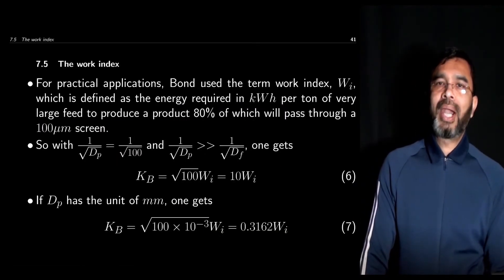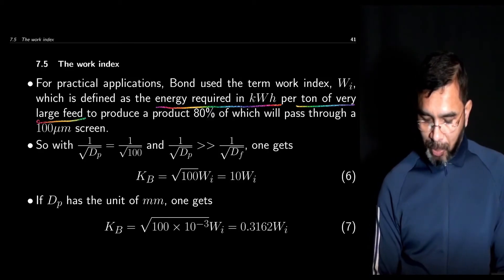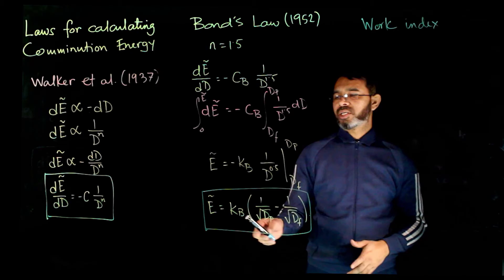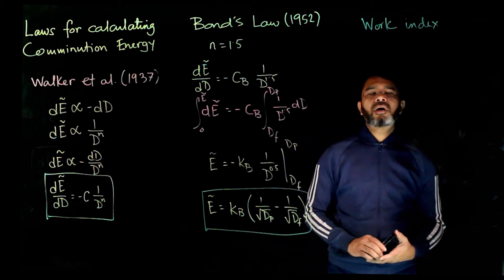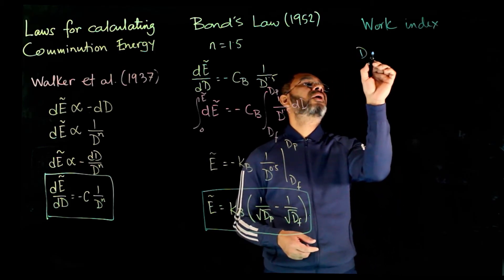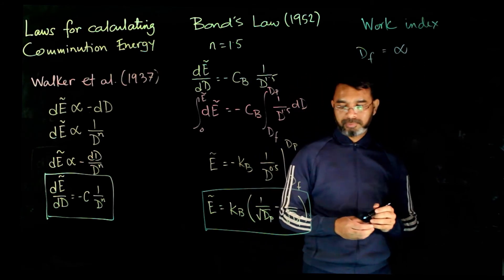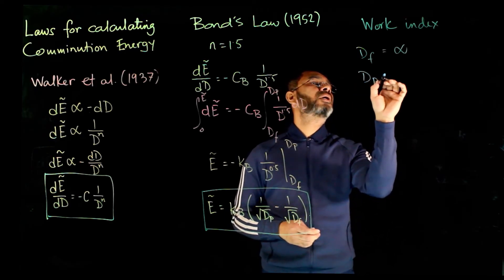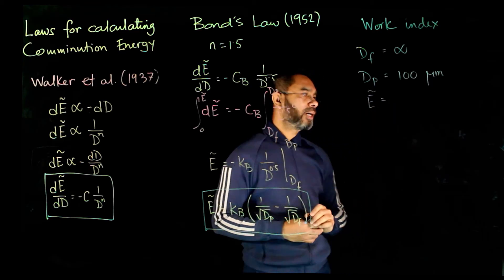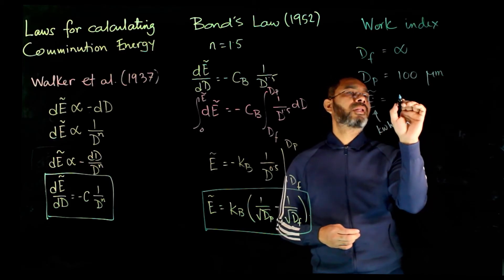Bond also proposed the concept of what is called the work index. Work index is defined as the energy required in kilowatt-hours per ton of a very large feed to produce a product 80% of which will pass through a 100 micron screen. The work index can be thought of as a way to express the constant in Bond's law by an index. So what Bond suggested: if you have a feed which is very large — effectively infinite — and you get a product of 100 micron size, the energy required in kilowatt-hours per ton of feed is the work index.